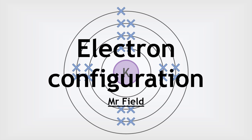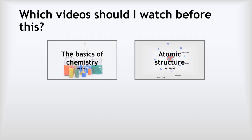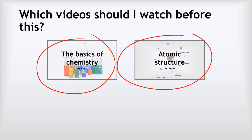Hello, this is Mr. Field and this is my video on electron configuration for GCSE students. This video relies on you having a secure understanding of the basics of chemistry and atomic structure — I have videos for both of those. If you're not confident with that stuff, make sure you look at those first, because this won't make sense without them.